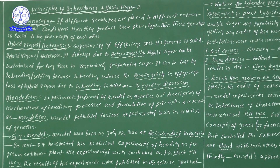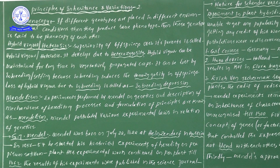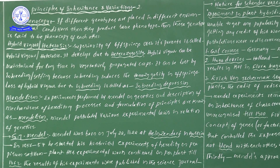Students, now in this video we are continuing. We are discussing continuation information of Principles of Inheritance and Variations — video number 2. Some technical terms we have to learn in introduction. The first one is phenocopy. Phenocopy is when different genotypes are placed in different environmental conditions and they produce the same phenotype.